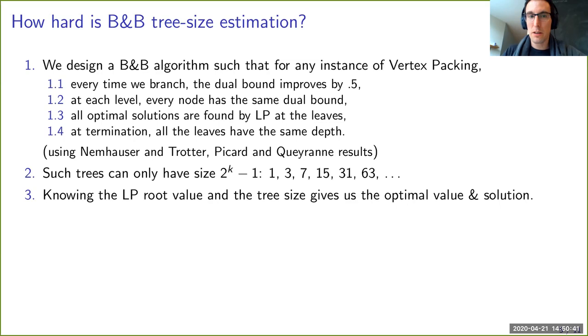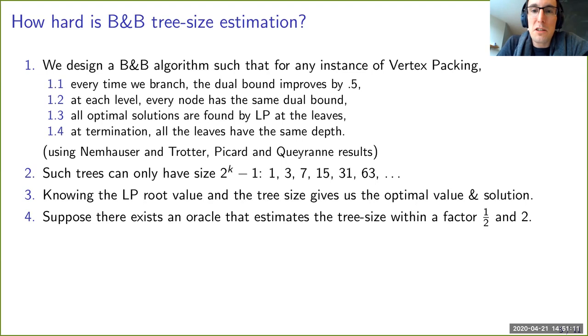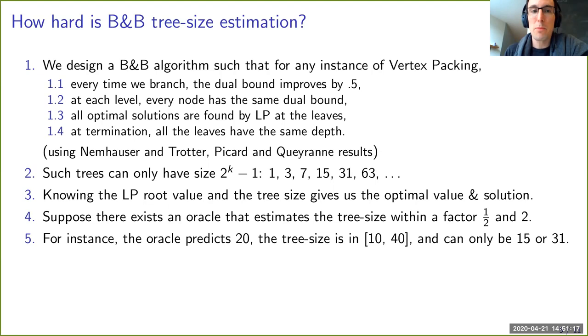And so the interesting property now of this branch-and-bound tree, when it is complete, is that the only possible tree sizes are two to the K minus one for some positive integer K. So you can have, you know, one, three, seven, 15 and so on. So now if I compute the LP root value, which I can do in polynomial time for vertex packing. And if I know the tree size, then by the property of the branch and bound algorithm, I can deduce the optimal value in the vertex packing. If I have the optimal value, I can retrieve in polynomial time, the optimal solution. So that means if I know the tree size, I can in polynomial time, find an optimal solution.